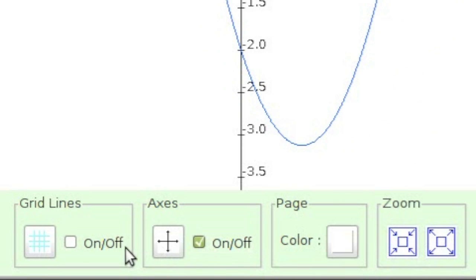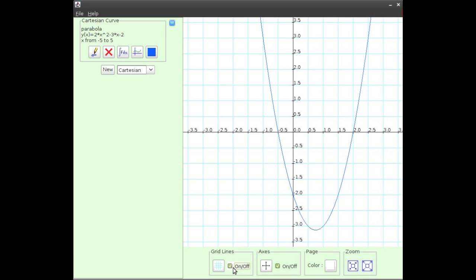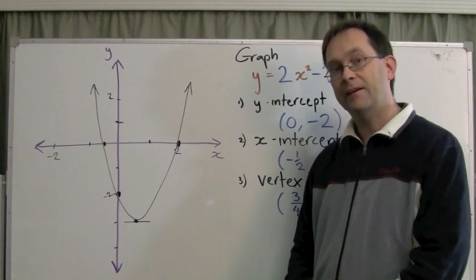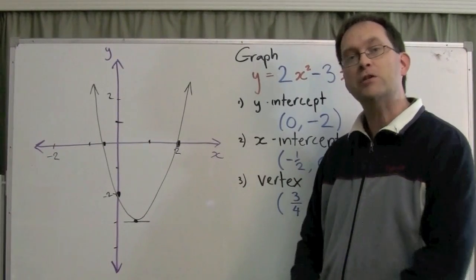I can use the zoom function to zoom out a bit, add some grid lines, and there's the graph. There's the vertex, and the intercepts. And basically, that's how you sketch a parabola.